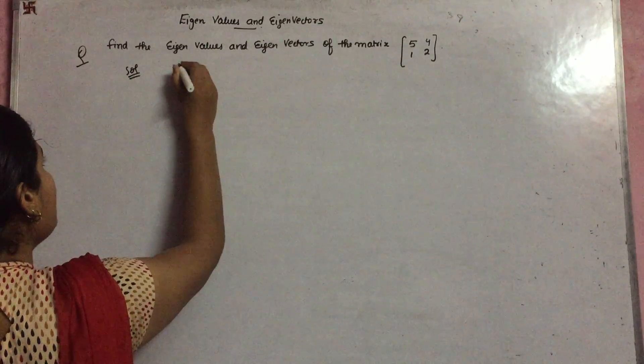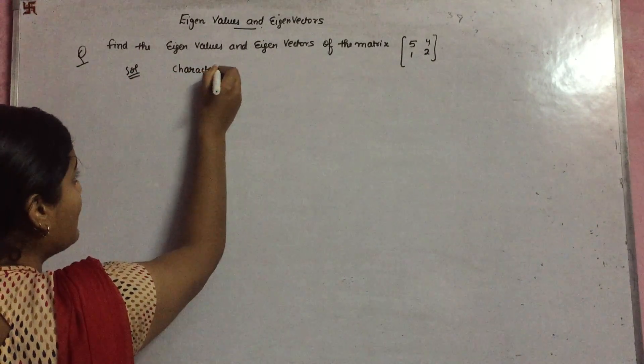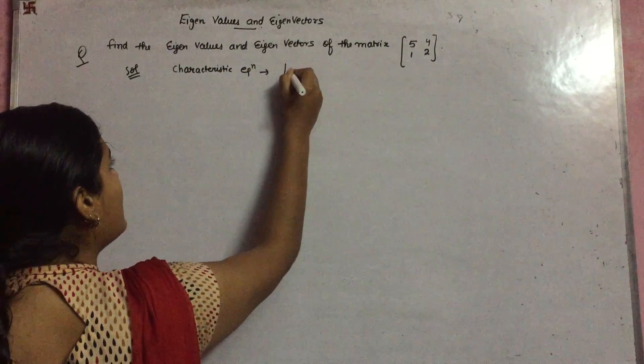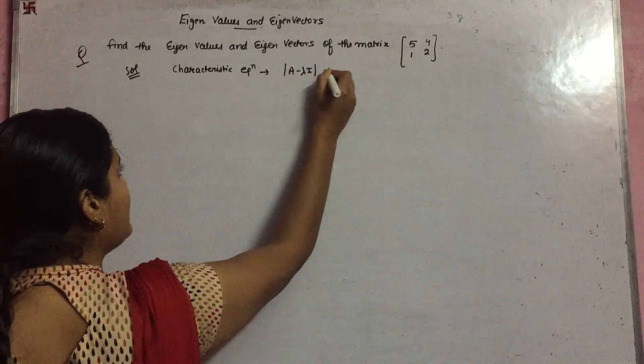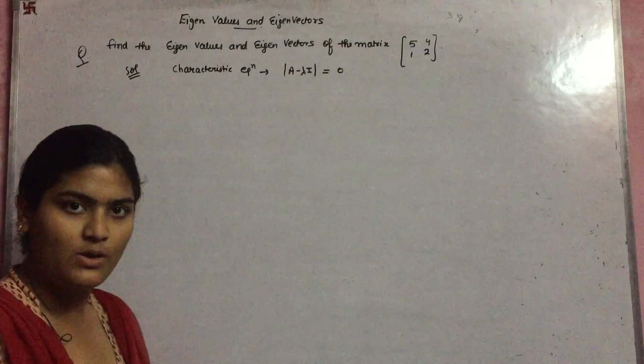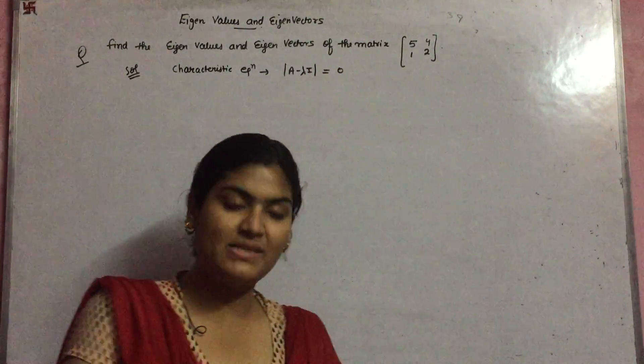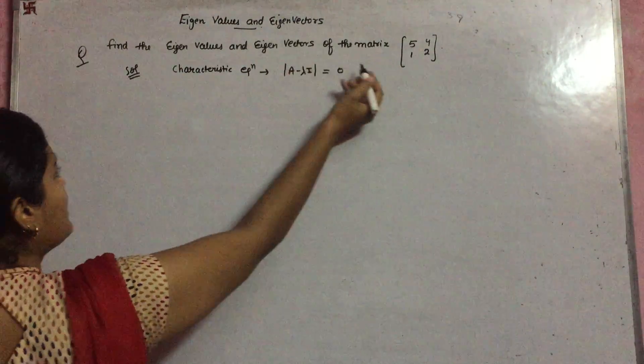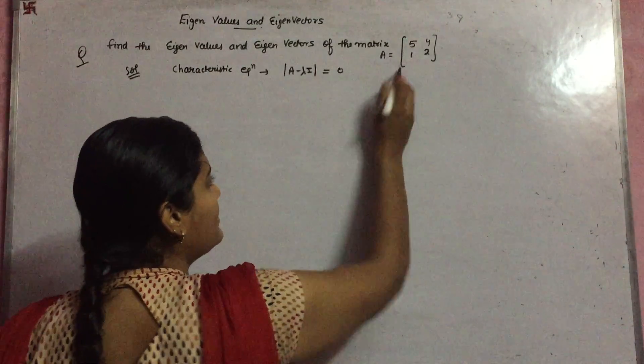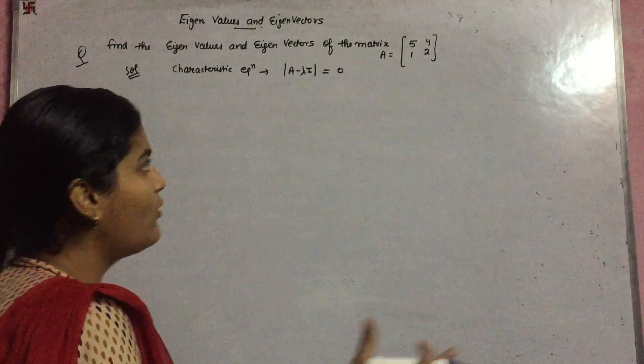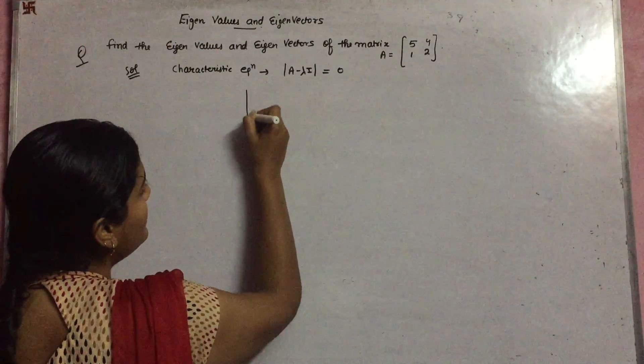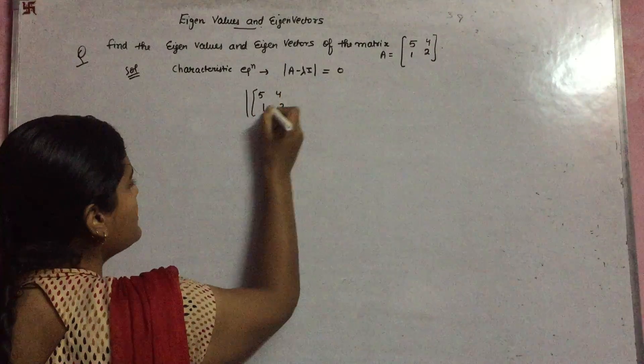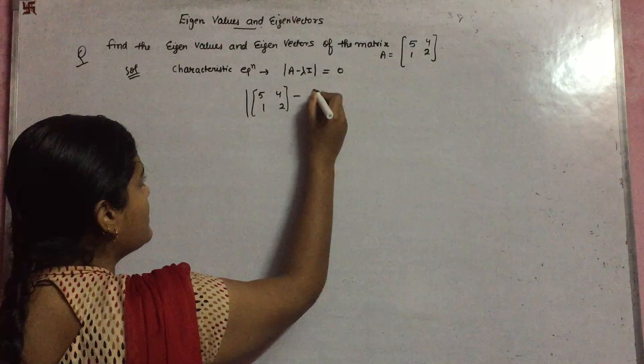How can you find them? Firstly, there is a characteristic equation for eigenvalues: |A - λI| = 0. You have to find the value of lambda. How can you evaluate it? Just substitute this matrix, let's suppose as A, substitute the value of A into it.